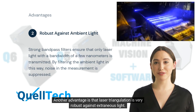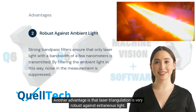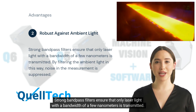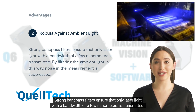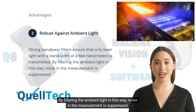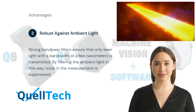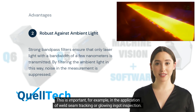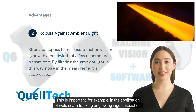Another advantage is that laser triangulation is very robust against extraneous light. Strong bandpass filters ensure that only laser light with a bandwidth of a few nanometers is transmitted. By filtering the ambient light in this way, noise in the measurement is suppressed. This is important, for example, in the application of weld seam tracking or glowing ingot inspection.